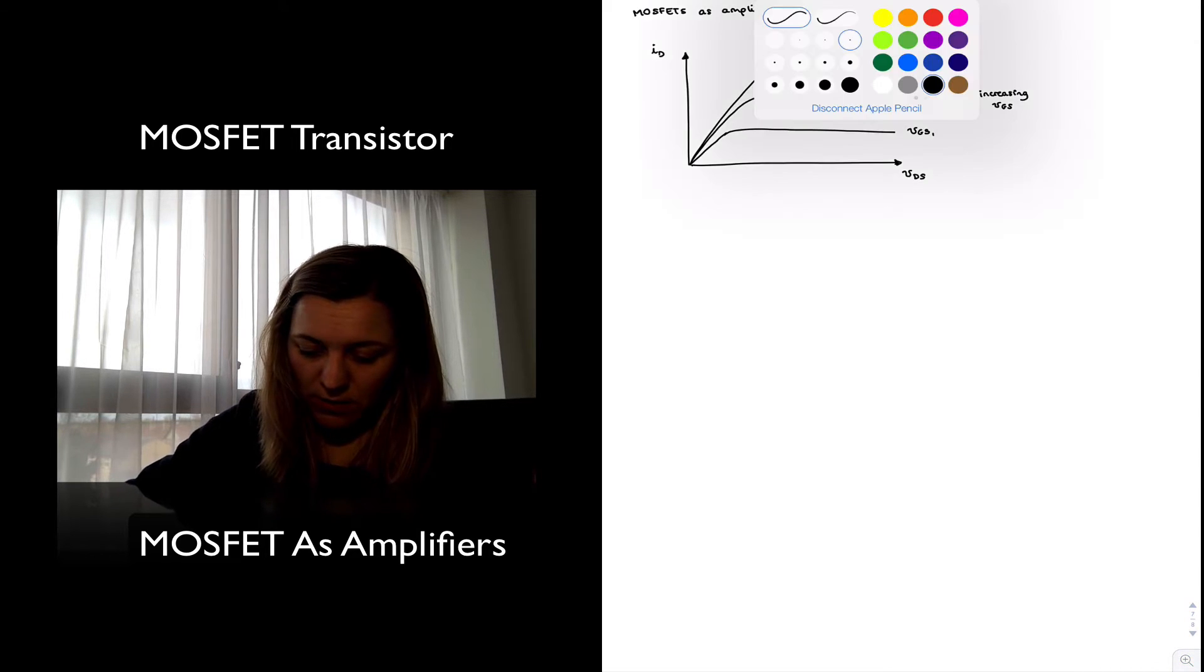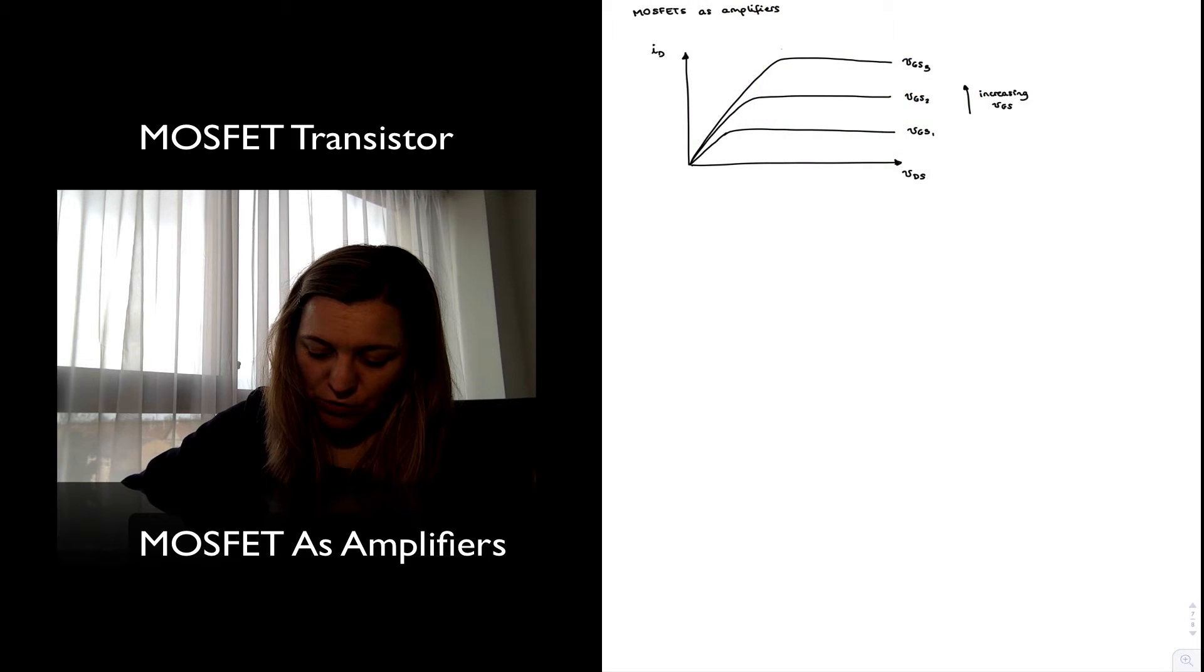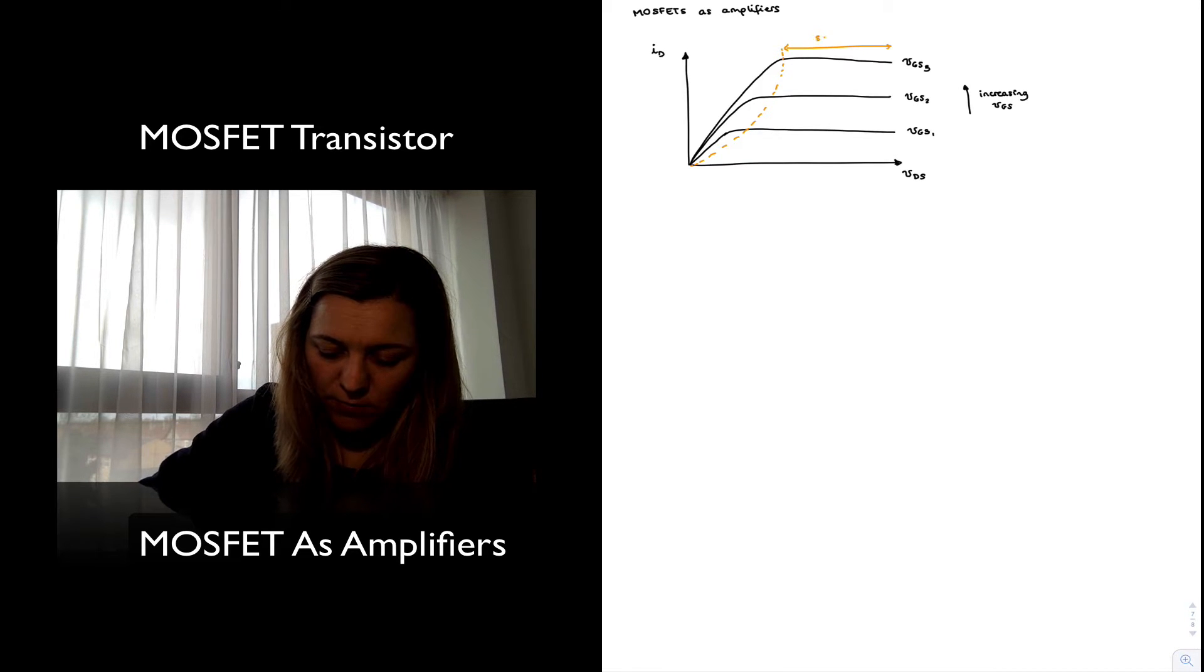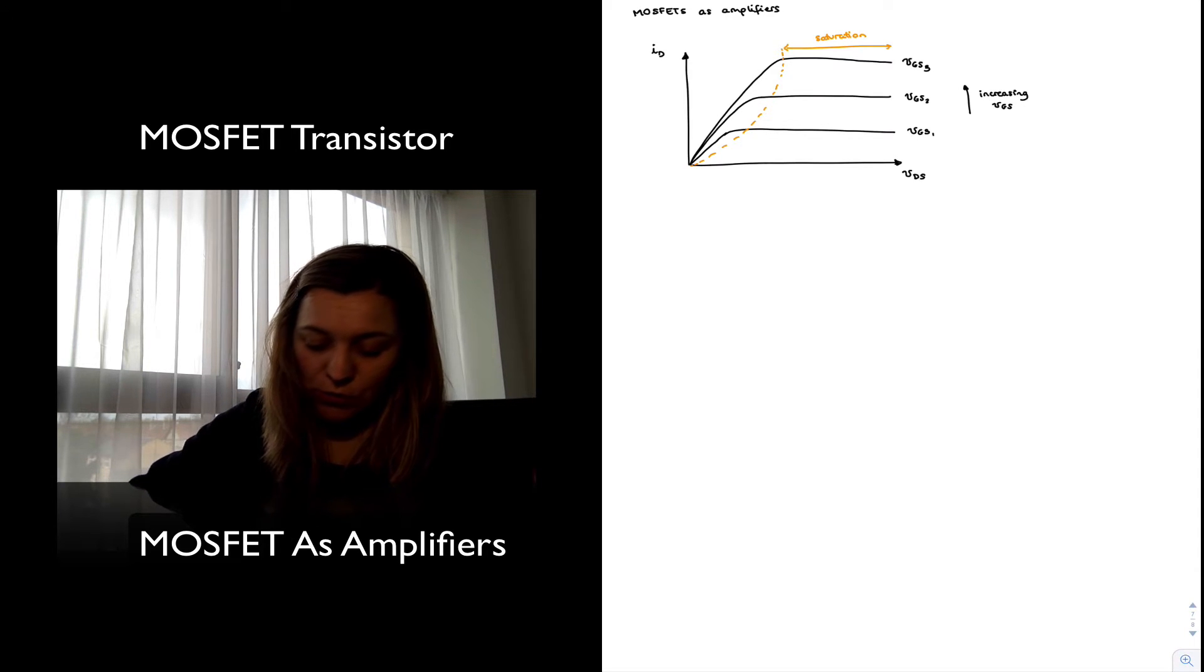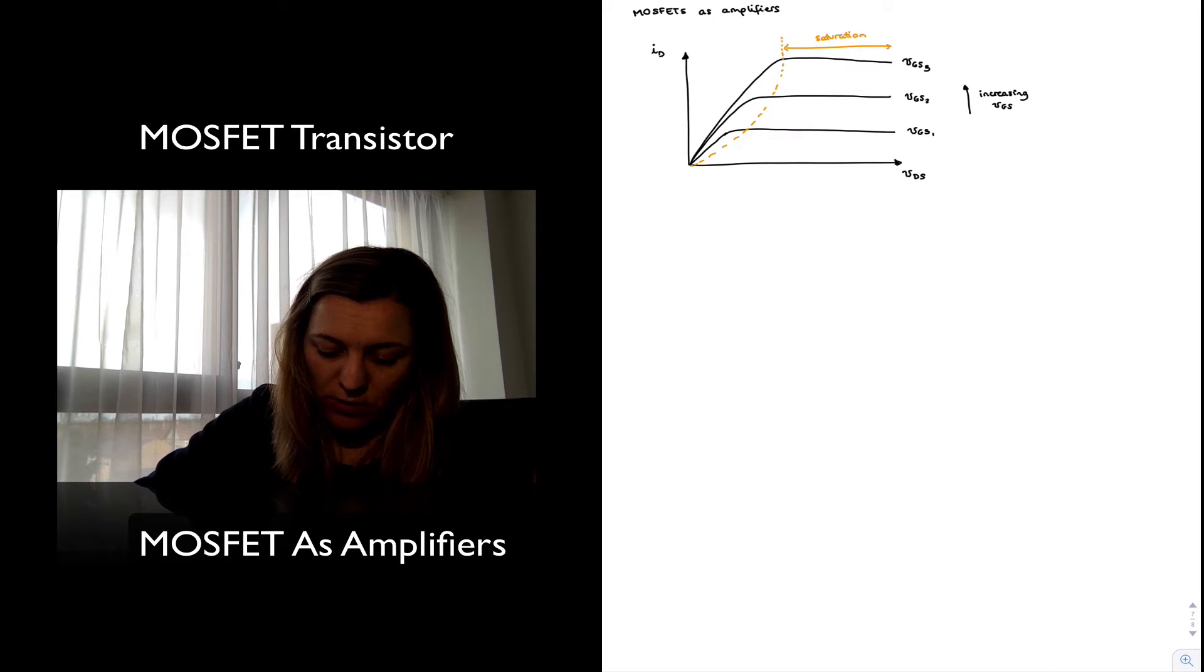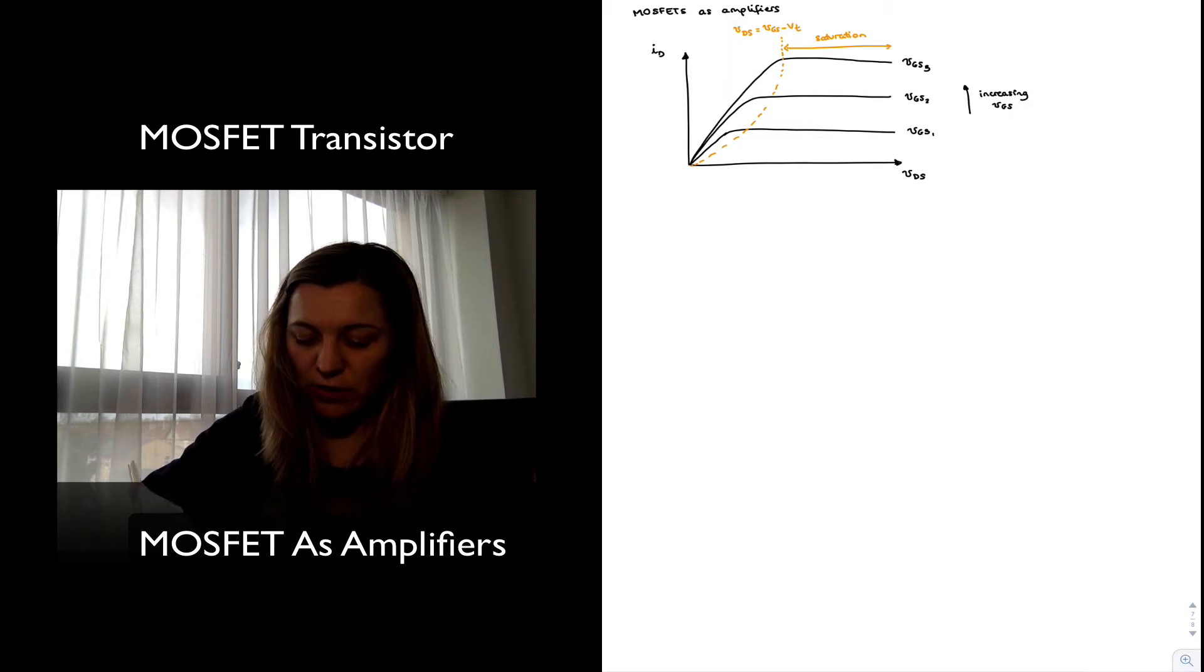And I have my saturation region. After the point where VDS is equal to the overdrive voltage, so basically this curve defines the line where VDS is exactly equal to VGS minus VT, the overdrive voltage.